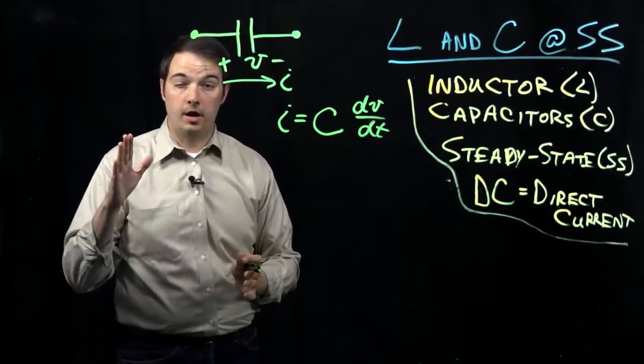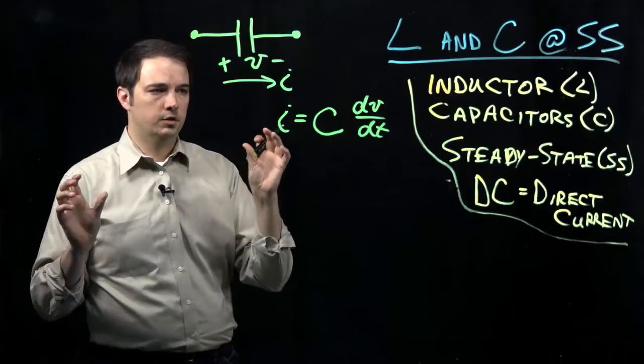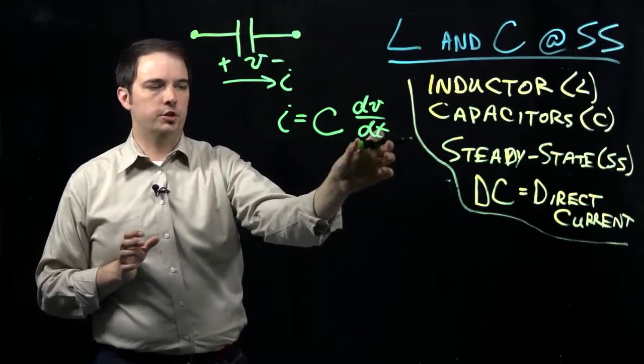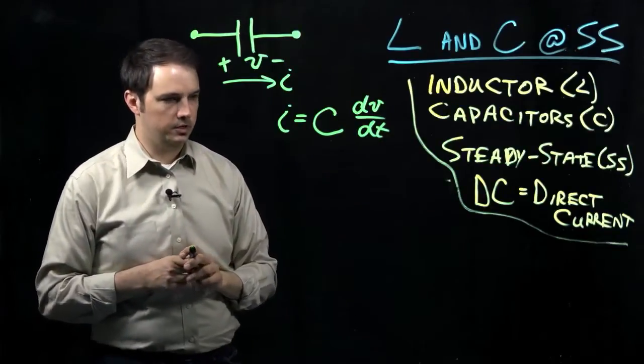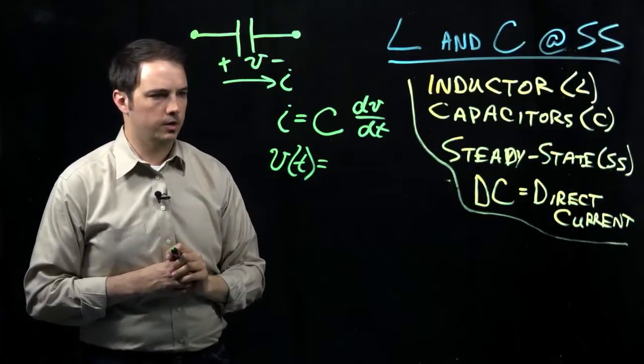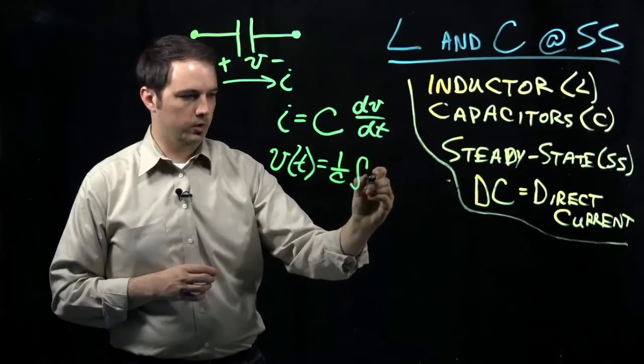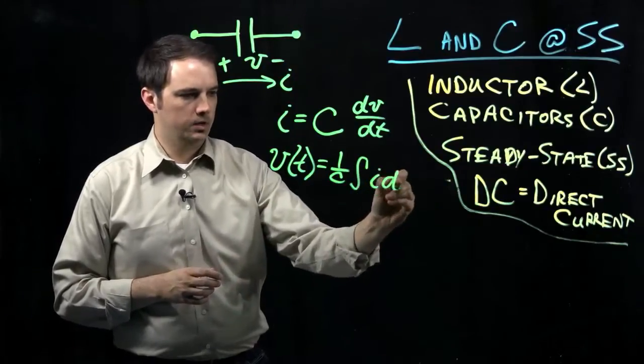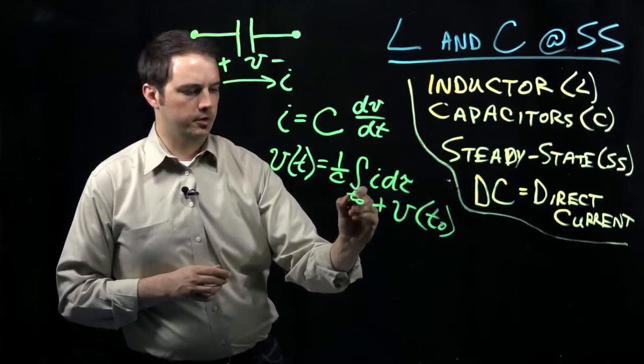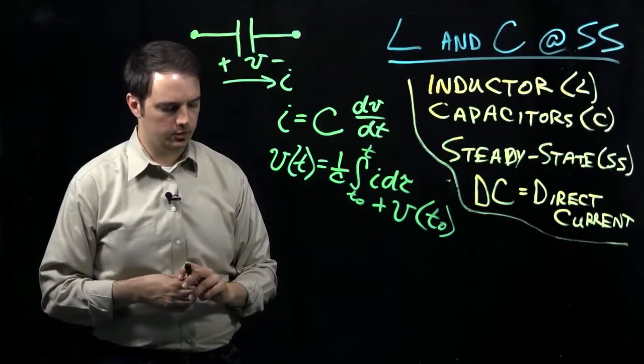So here, again, similar to how we saw the voltage in the case of an inductor, we saw that the voltage had some effect or was changing with respect to changes in the current. Here, with the case of a capacitor, it's the current that's going to be affected by any changes in the voltage with respect to time. So that's our DV DT term there. And then we could, again, similarly do an integration, swap some variables around to come up with the voltage with respect to the current, where this would be 1 over C, the integral over whatever time period you're looking at, our current I times D tau, plus whatever the initial voltage was, which would just be V at time T0.